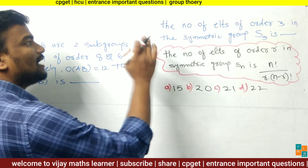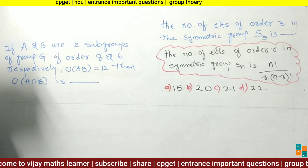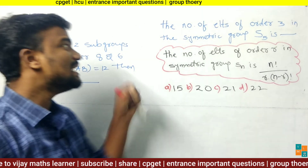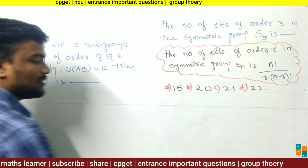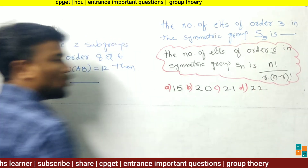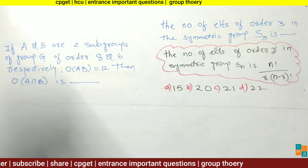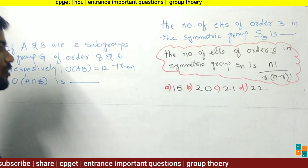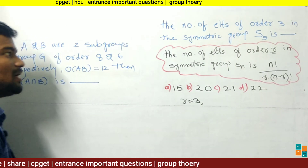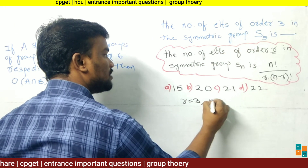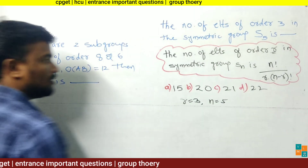Now see the fourth problem: the number of elements of order 3 in the symmetric group S₅. We solve this using the formula: the number of elements of order r in the symmetric group Sₙ equals n! / (r × (n−r)!). Here, r=3 and n=5.